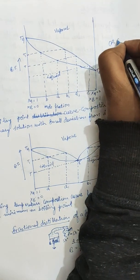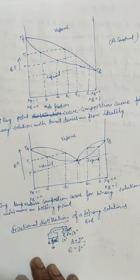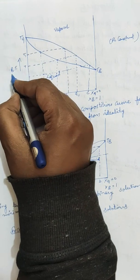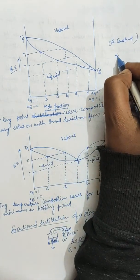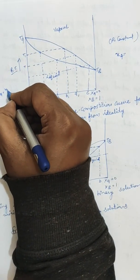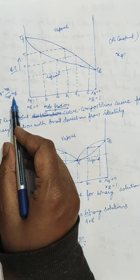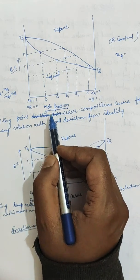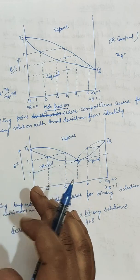Pressure P is kept constant here. The principle underlying fractional distillation can be understood with the help of temperature-composition curves. The x-axis is composition, written in the form of mole fraction. The mole fraction of A is xA = nA / (nA + nB), where nA is the number of moles of component A and nB is the number of moles of component B.